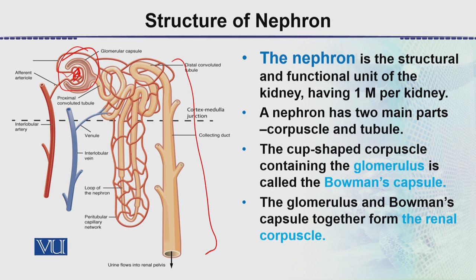To explain the nephron further, the blood supply is a very important part. The efferent arteriole sits within the cup and is a very important structure, which we will see in detail.